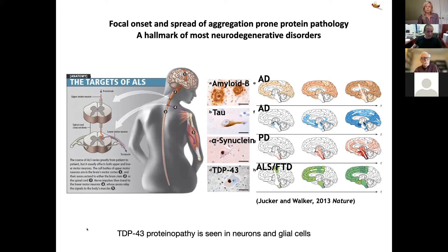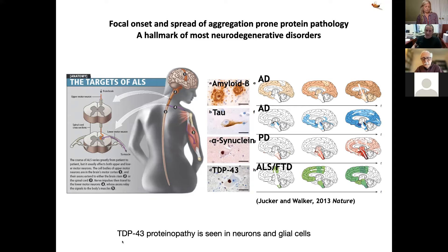I'm going to focus on pathology of a protein called TDP-43, which has already been mentioned. The aggregation of TDP-43 and its appearance in inclusions in the cytoplasm is seen in about 97% of ALS subjects in postmortem tissue. The degree of this pathology — meaning the number of cells — appears to vary from patient to patient, but some degree of TDP-43 proteinopathy is seen in almost all ALS patients, regardless of whether the patient has a sporadic or familial history, and it occurs in most types of genetic forms of ALS. It's seen in both neurons and glial cells.